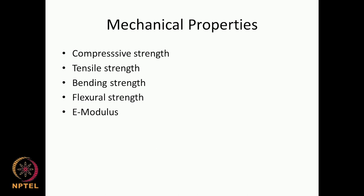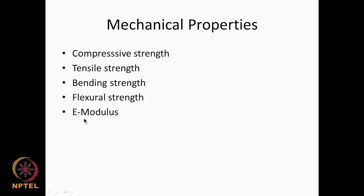So what are the mechanical properties? Compressive strength, tensile strength, bending strength — because many times we keep bending our arms, our foot, our leg. The material has to have that particular property. Flexural strength — we are flexing some parts. Even the diaphragm heart valve keeps opening and closing thousands of times a day over a very long period. So they should have enough strength. Then modulus — the modulus of elasticity, which is related to stress and strain. These are the mechanical properties the material has to have.